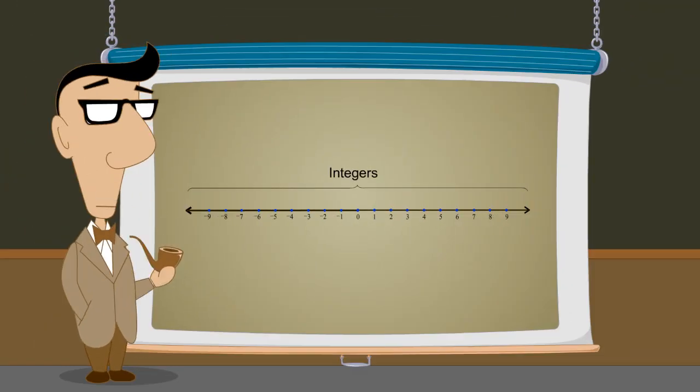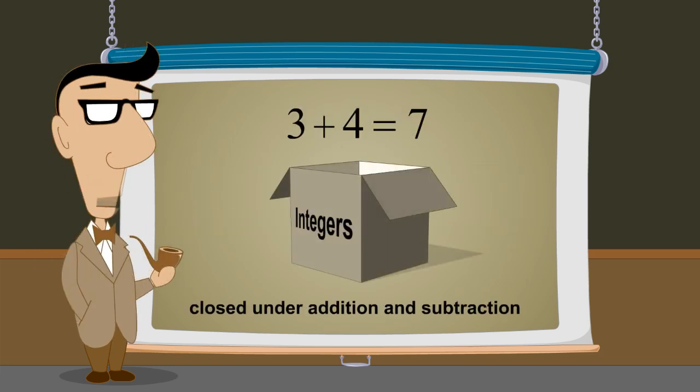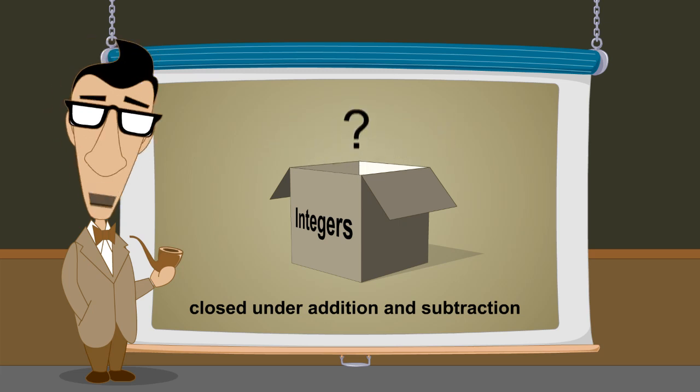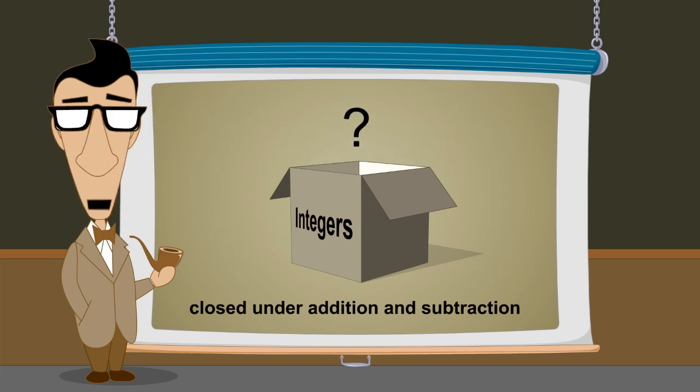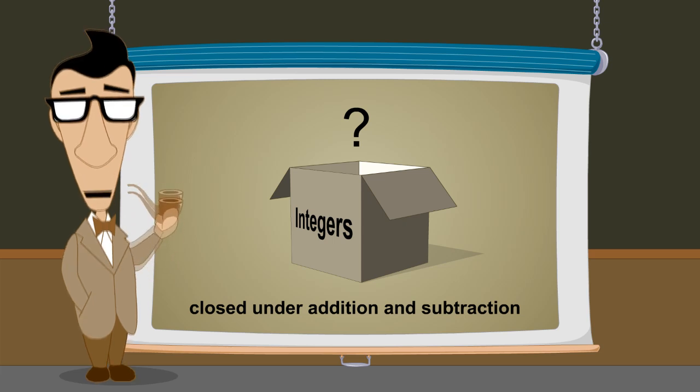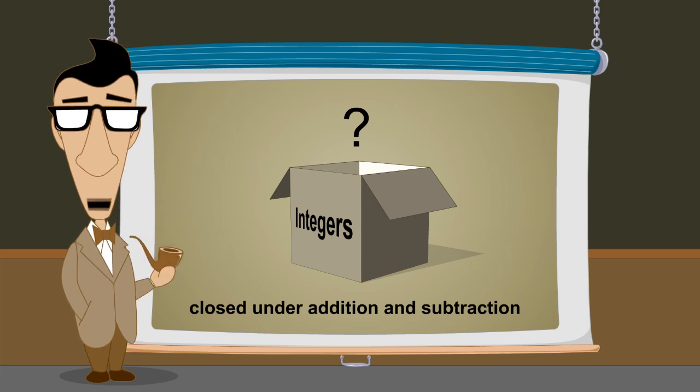With the invention of integers, we now have a much more powerful number system. Since the integers are closed under addition and subtraction, we can represent the result of adding or subtracting any numbers in our system. However, as we shall soon see, there are still some operations which cannot be represented using only integers.